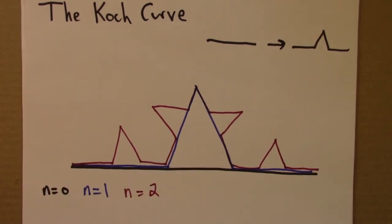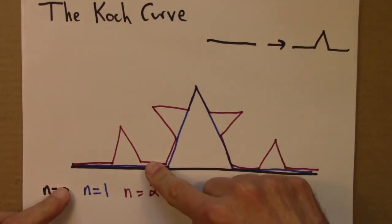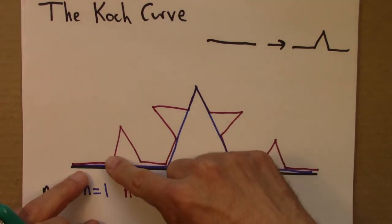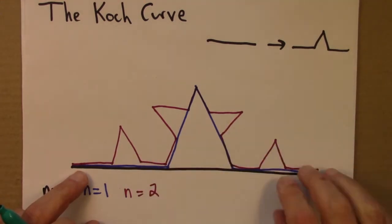And then I could repeat that one more time. There are, let's see, one, two, three, four, sixteen of these segments. Each of those sixteen line segments gets replaced with a bent segment.